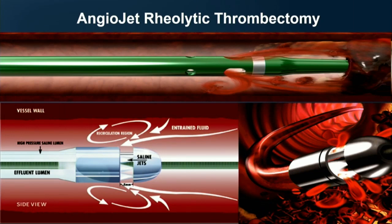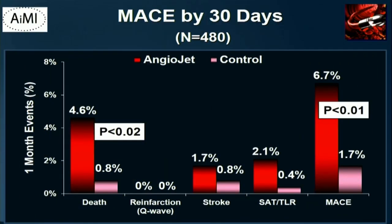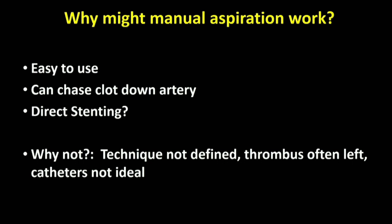What about AngioJet? I actually helped develop the AngioJet early in my career. Clearly it's effective, but the AMI trial actually showed it was worse to use AngioJet. Very few people use it now — it's problematic because of heart block and mostly because of the switch to aspiration thrombectomy.